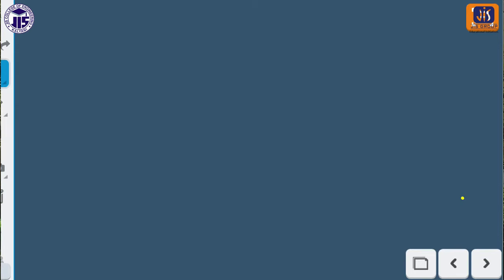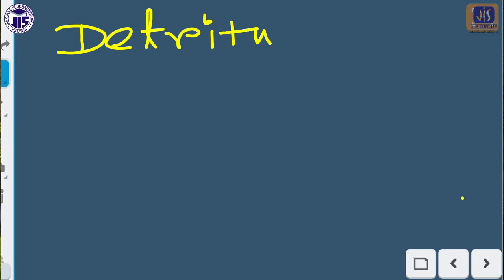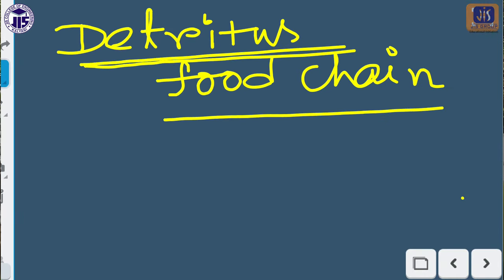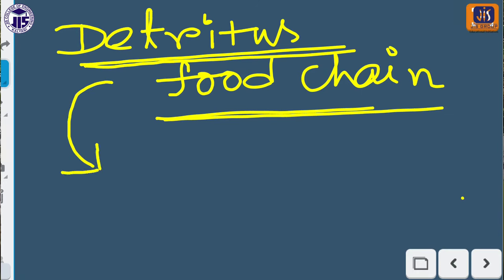The fourth kind is the detritus food chain. This kind of food chain mainly exists in the mangrove ecosystem. This food chain starts with the mangrove leaves and then proceeds with higher organisms. I will discuss this in detail when we cover the mangrove ecosystem.